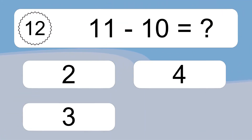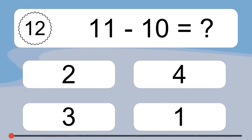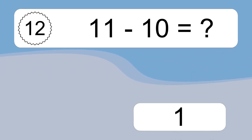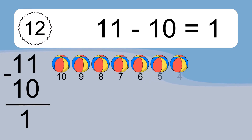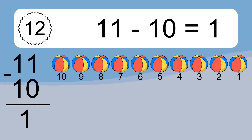11 minus 10 equals what? 11 minus 10 equals 1. Let's count it: 10, 9, 8, 7, 6, 5, 4, 3, 2, 1.